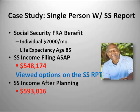We're going to look at a single gentleman. We'll show his social security options prior to any planning. His Social Security benefit at full retirement age — he was 66 — was $2,000 a month, with a life expectancy to age 85. If he filed as soon as possible, at 62, his benefit would be $548,000 over his lifetime. But with proper planning, his overall lifetime total increased to $593,000 — a fairly large difference.